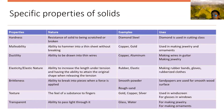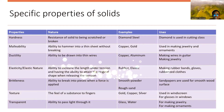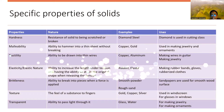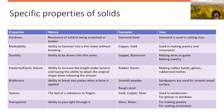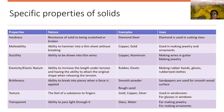The next property is texture. Texture is the feel of a substance. Examples are gold, purple, and silver. The uses include being used in windscreens and for glasses in windows.